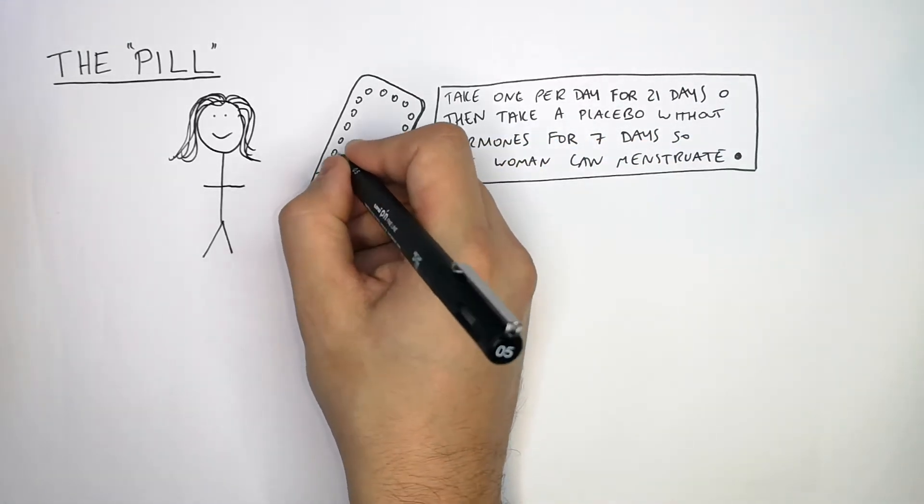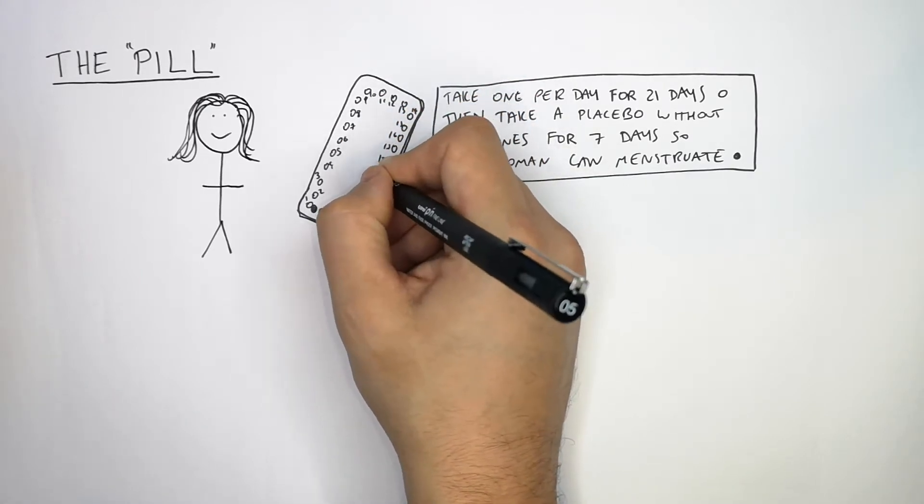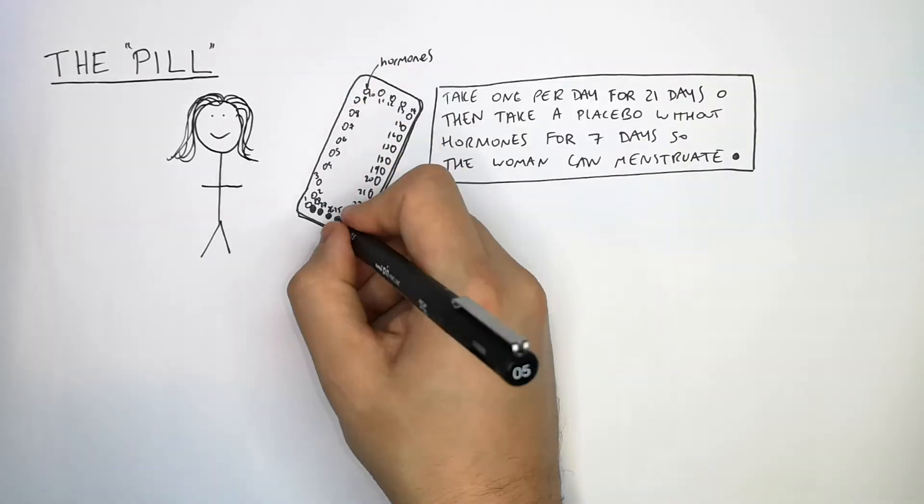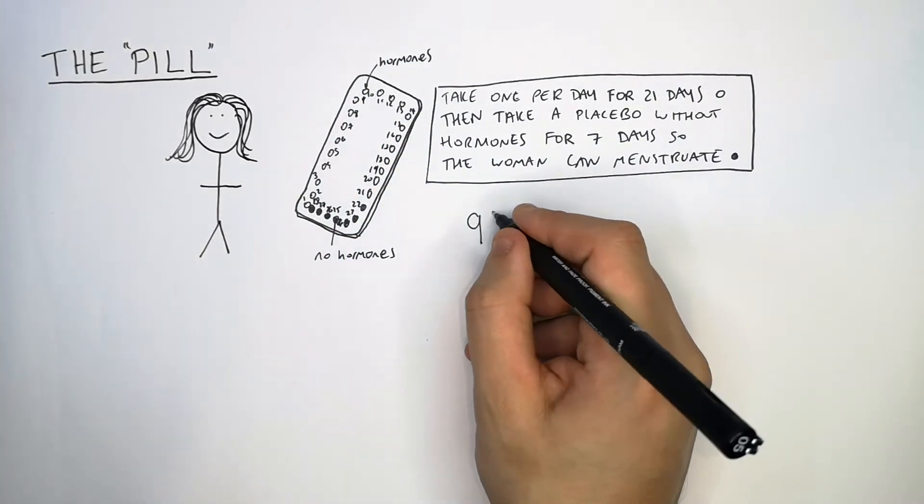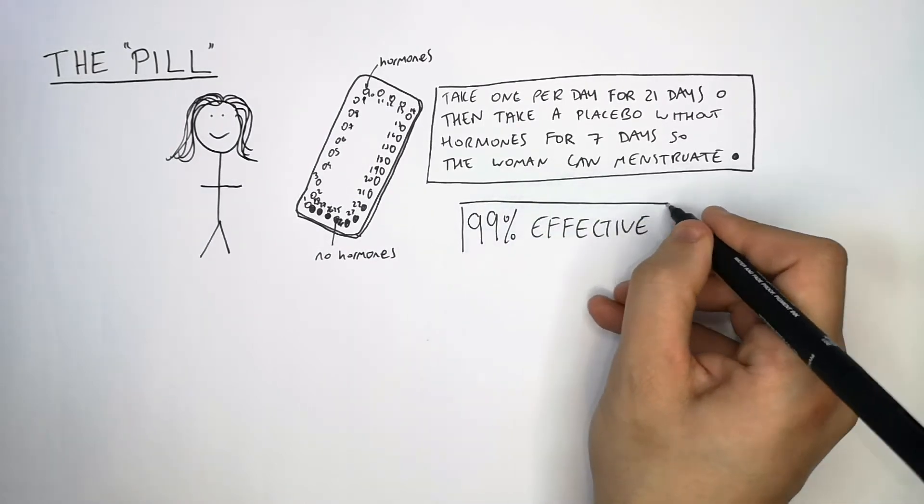For those 21 days she is taking the hormonal pill, and for the rest of the seven days she needs to be able to menstruate so she comes off the pill. Taken properly, this method of contraception is 99% effective in preventing pregnancies.